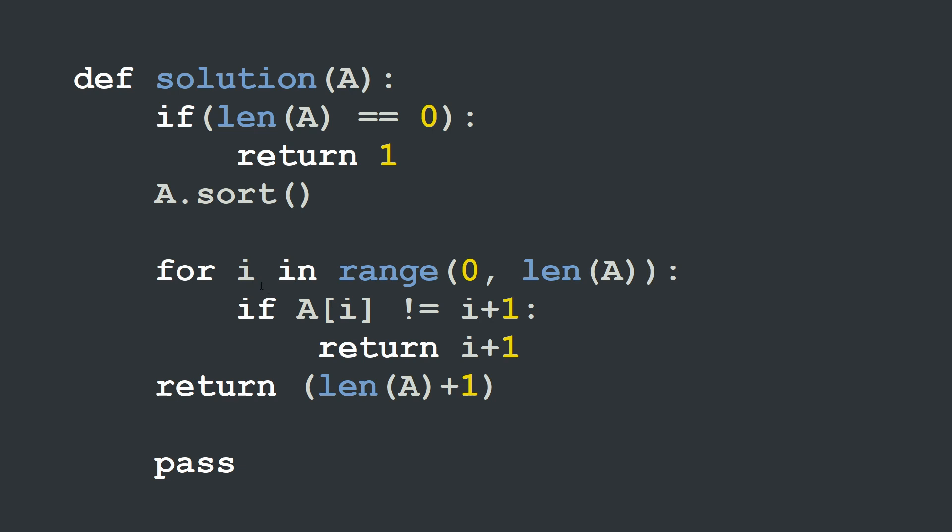And I will check for each index i if the element or the value of the element A[i] is different than the value i+1. Because in this case I will return the missing element which is i+1, as we have already explained in the algorithm.